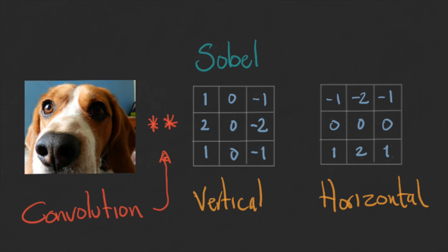You can see the kernel as a template that is looking in the image for a specific pattern. So we can use that in our advantage, depending on the application.